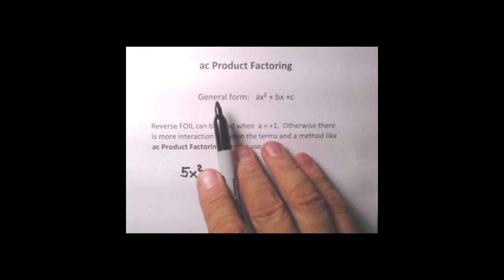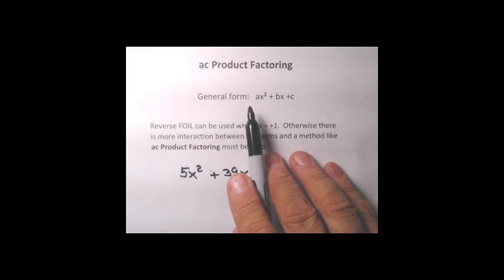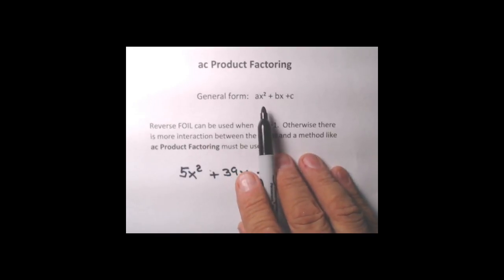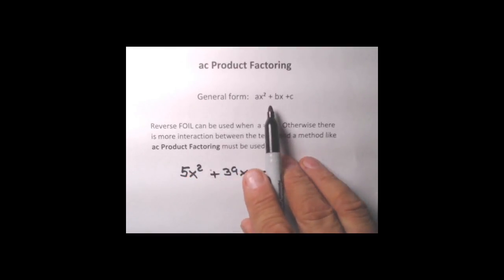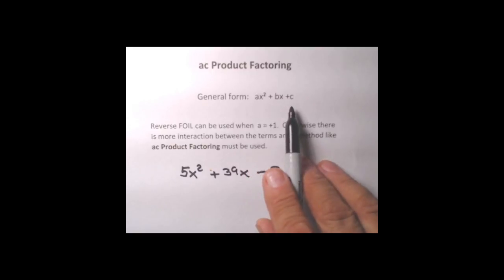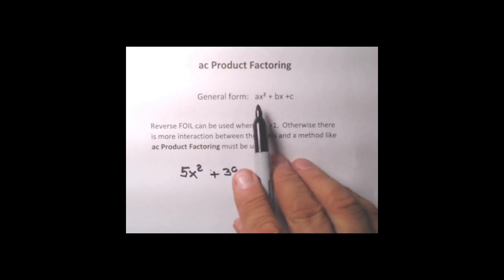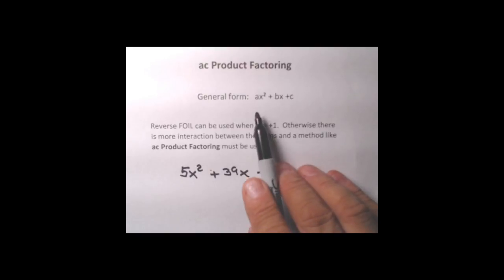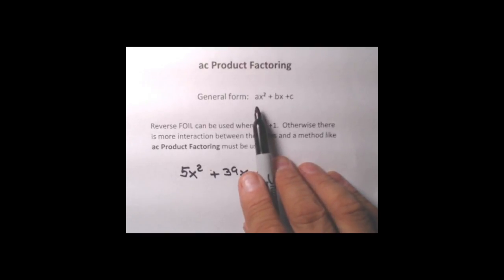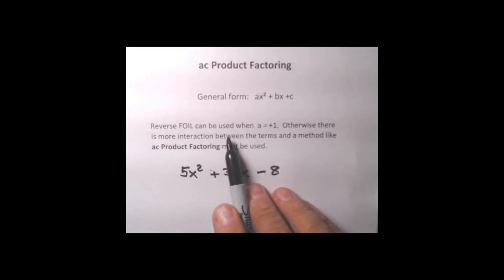What we've been factoring here are quadratic equations. Quadratic equations have a squared term, and if the variable is x, we can always write them in the general form ax squared plus bx plus c. The a, b, and c stand for the coefficients: a is the coefficient of x squared, b is the coefficient of x, and c is the plain number at the end. Now, if the leading coefficient — the a — is a nice plus one, then reverse FOIL can be used.